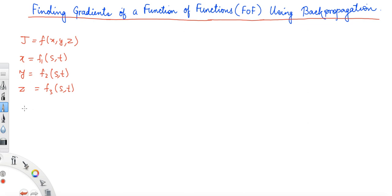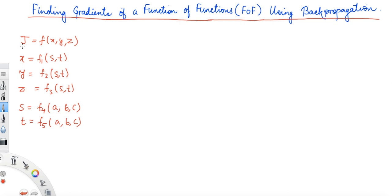S and T again depend on some other parameters — these are known as the input variables. We have S as a function F4 of parameters a, b, and c, and T as function F5 of a, b, and c. We use F1 through F5 to indicate that all these functions may be different. So J is ultimately a complicated function of a, b, and c.